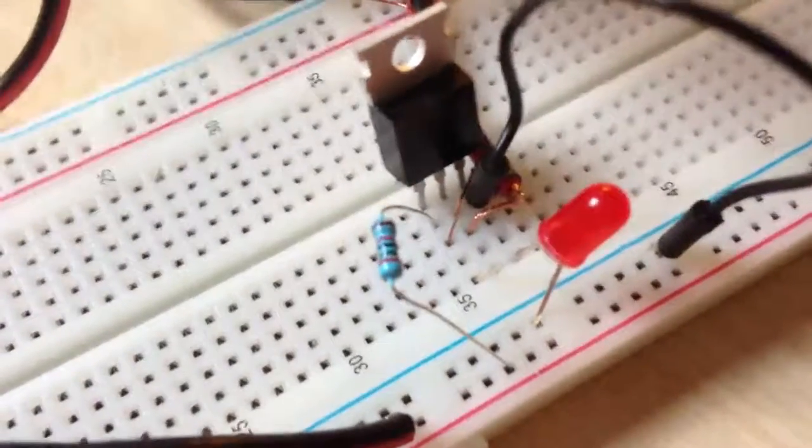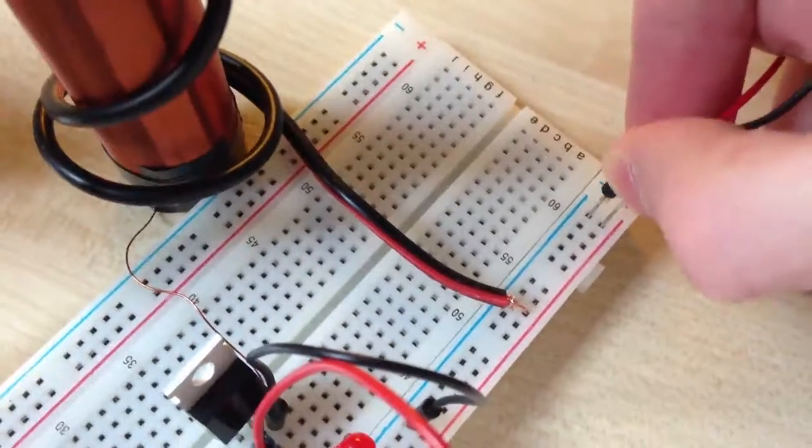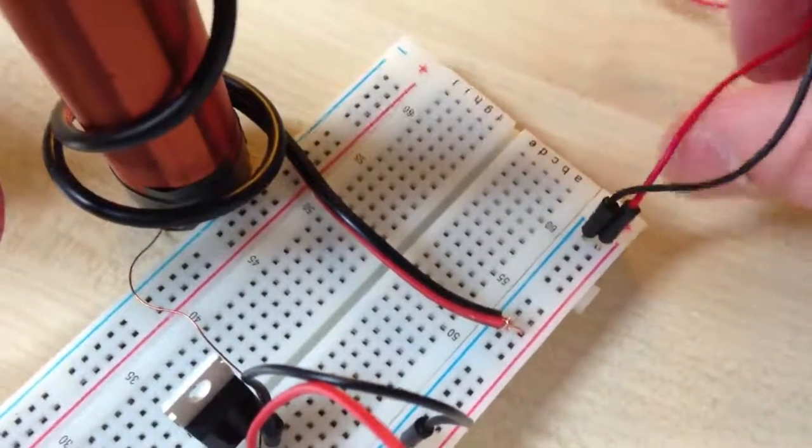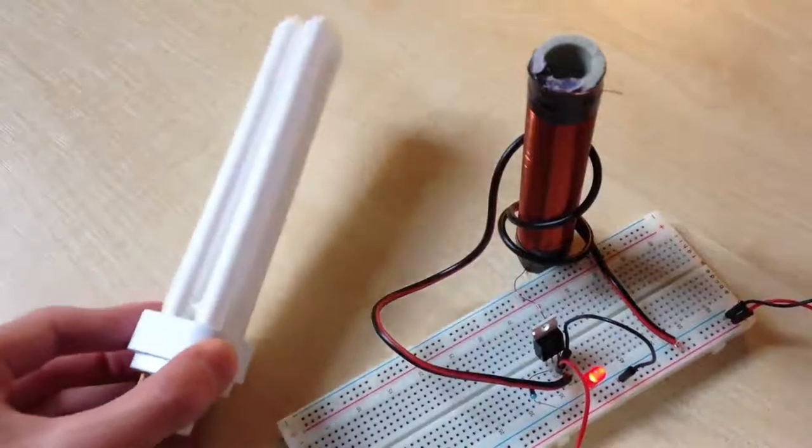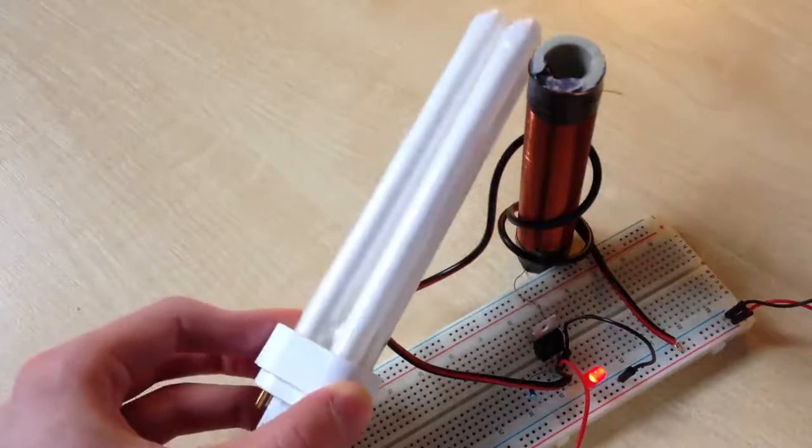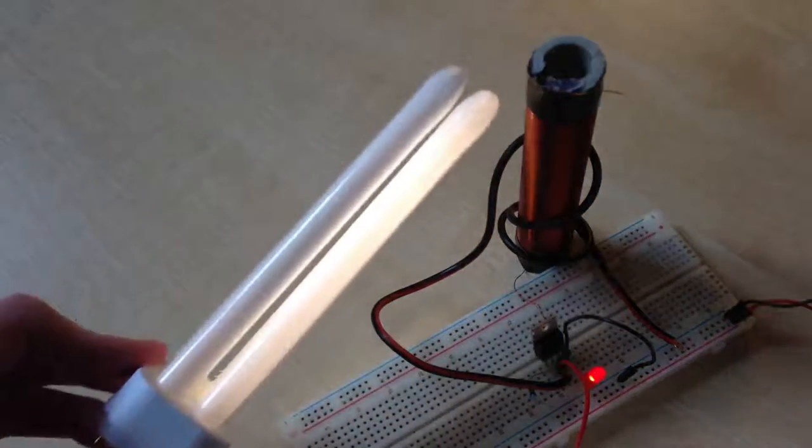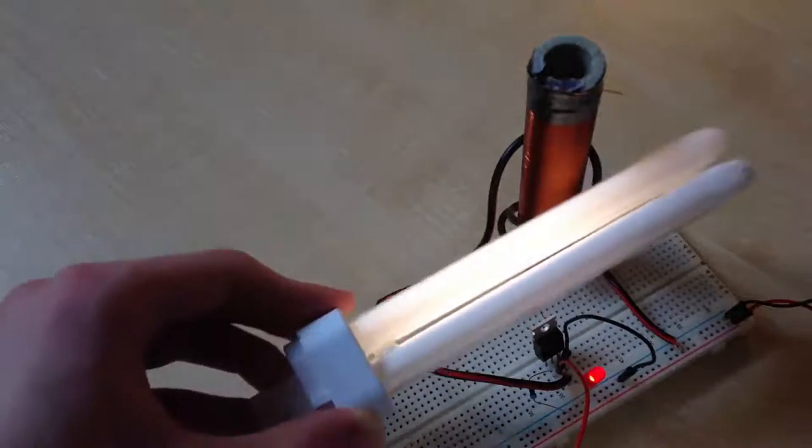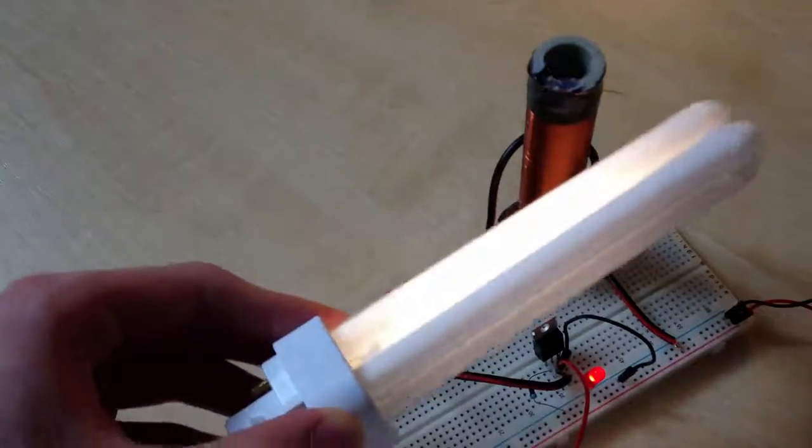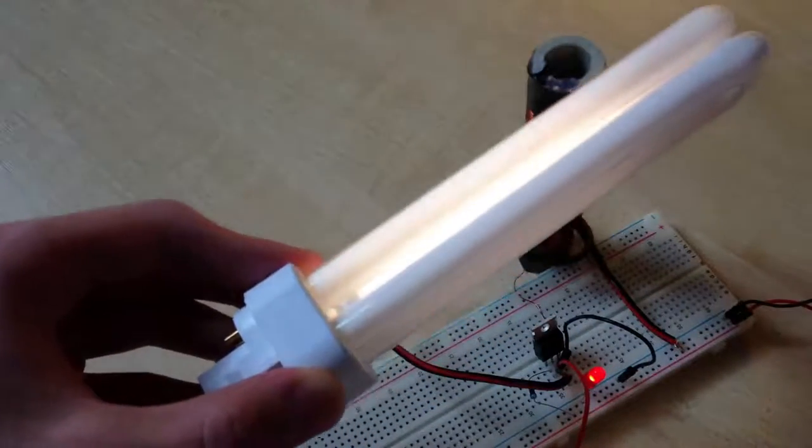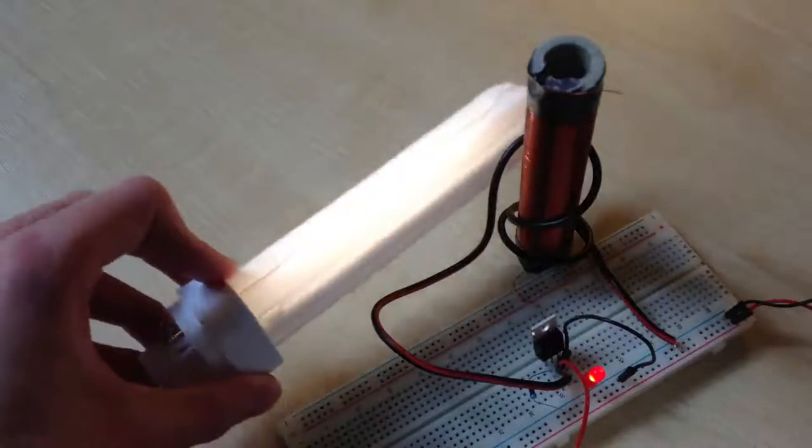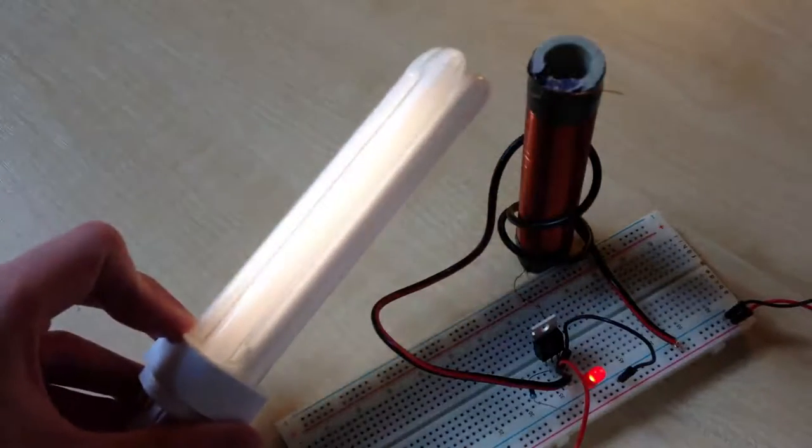So let's test it. Simply plug our 9V power supply to positive and negative rails, and bring our fluorescent light bulb close to coil. And as you can see our fluorescent light bulb is glowing. It's because coil creates electromagnetic field and gas in fluorescent light bulb converts it into visible light.